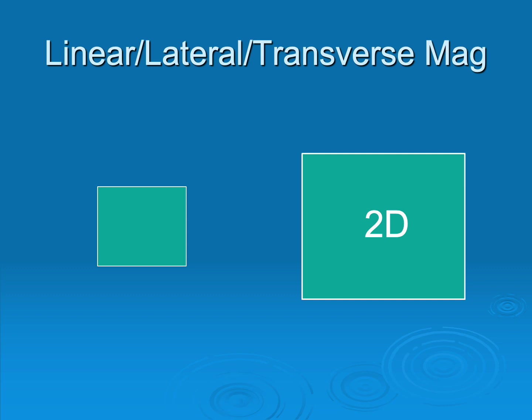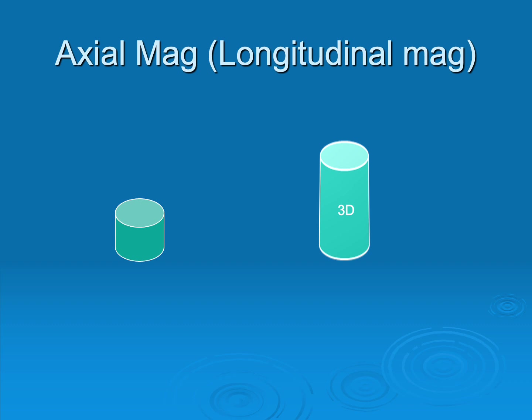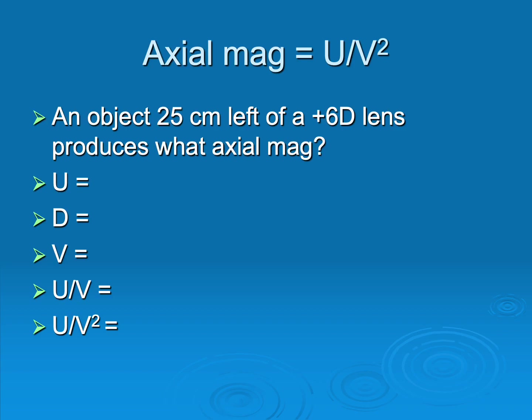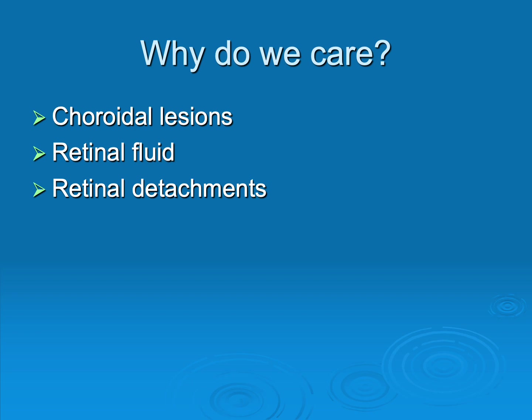We don't live in a two-dimensional world — we have three dimensions. The magnification in 3D is called axial magnification, also known as longitudinal magnification. The formula is straightforward: you take the linear magnification and square it. For an object 25 centimeters left of a plus 6, the linear mag is minus 2, and squaring it gives an axial mag of 4. This matters clinically for things like choroidal lesions, optic nerve head edema, and retinal fluid around a break — anything where you're assessing elevation inside the eye.